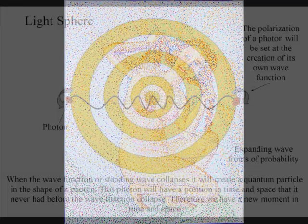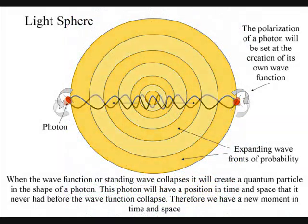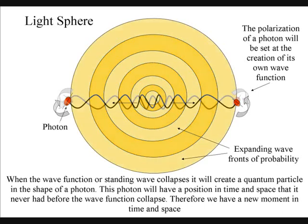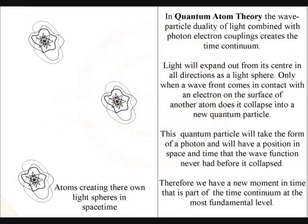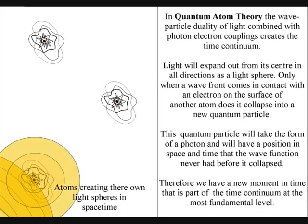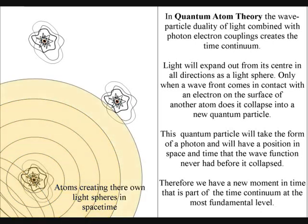The wave function will take the form of a light sphere of quantized wave fronts. Because it is impossible to achieve absolute zero, atoms will continuously radiate out wave fronts. When a wave front comes in contact with another atom, it will collapse into a moment of time. And then the next wave front will create the next moment in a chain reaction, creating the forward momentum of time.